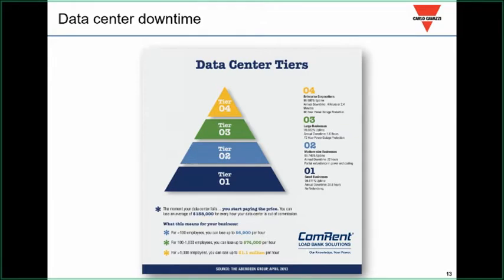The average cost is $5,600 per minute, but for a tier four it's beyond catastrophic. Depending on the level of redundancy—tier three, tier two—a tier one still allows 28 hours of downtime per year with no redundancy. A lot depends on the data center's customers, whether it's self-supported or selling server space to other entities.